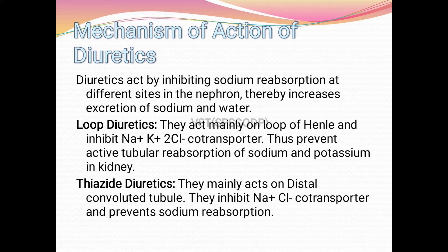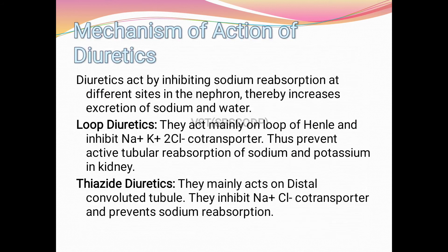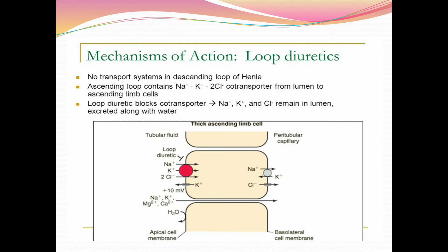Thiazide diuretics mainly act on the distal convoluted tubule. They inhibit the sodium-chloride co-transporter and prevent sodium reabsorption. Both loop diuretics and thiazide diuretics block the co-transporter, so Na+, K+, and Cl- remain in the lumen and are excreted along with water.